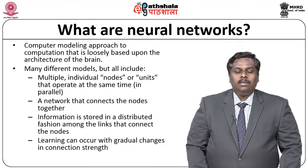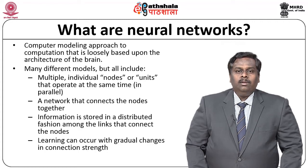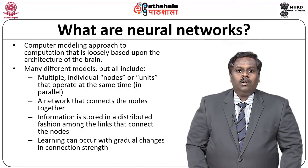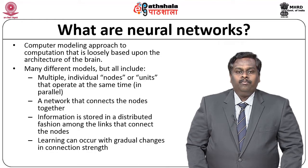To start with, we should first understand the basic computer modeling approach to computations. Computer modeling approaches to computations are loosely based on the architecture of the brain, especially with respect to neural networks. There are many such models available, but all these models in general will have the following components. The first important component is multiple individual nodes or units that operate the same as brain units — which are basically the neurons — and all these units operate at the same point of time, that is, in parallel.